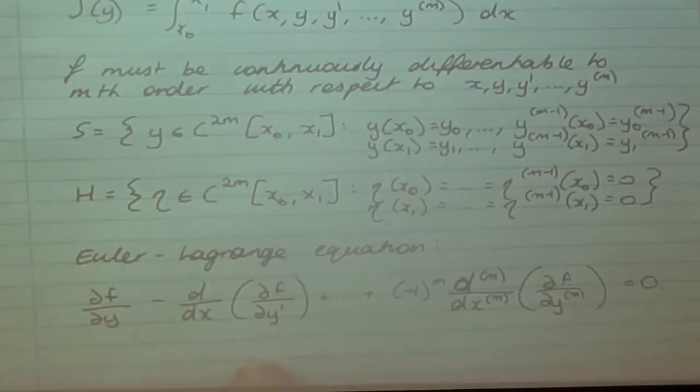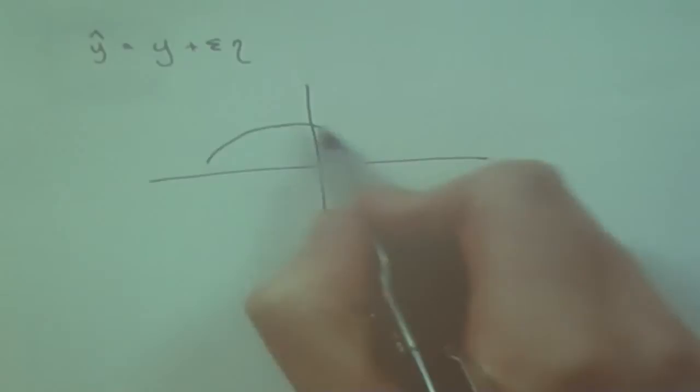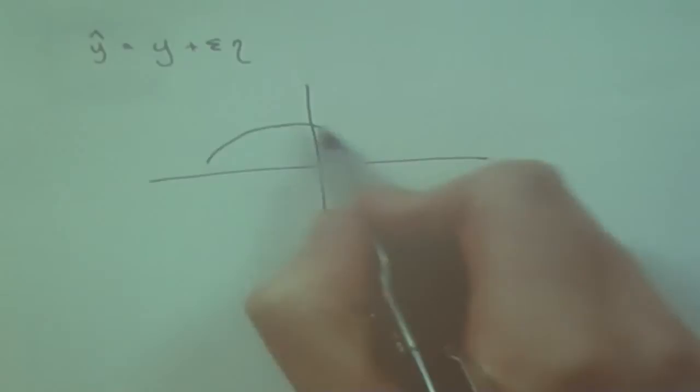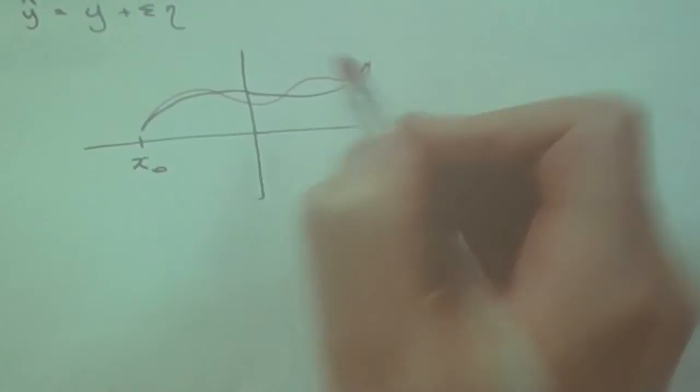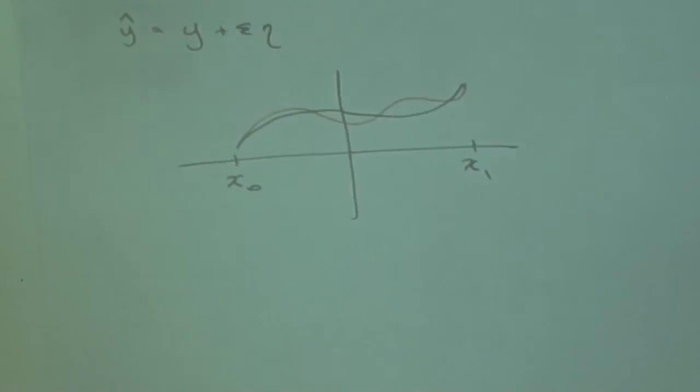That is the EL equation we are working towards, so you know where we're going. The eta function allows us to define a perturbation of y: y_hat = y + ε·η, which gives points close to our y function. If y goes from x0 to x1, then y_hat might look slightly different in between but matches exactly at the endpoints, because we defined eta to be zero there — both the function value and its derivatives.